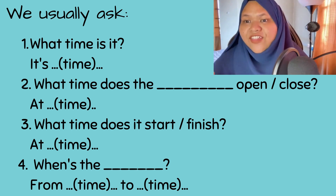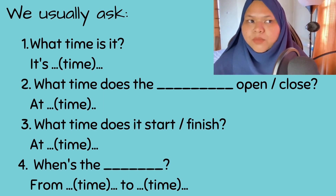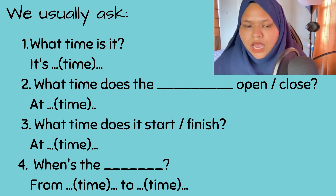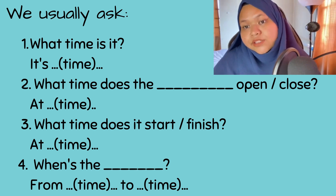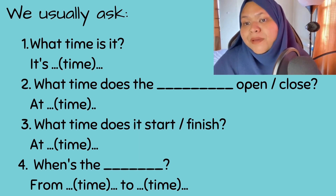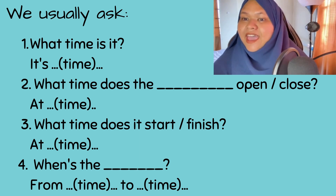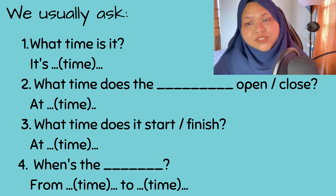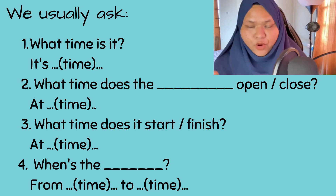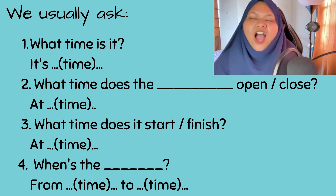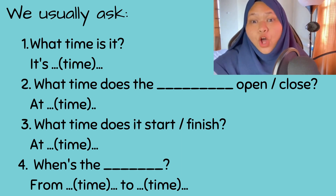For example, 'When's the class?' — when you want to say from what time to what time. Your answer should be: 'From 8 AM to 12 PM.' Question four is used when you want to talk about a range of time with two time points.